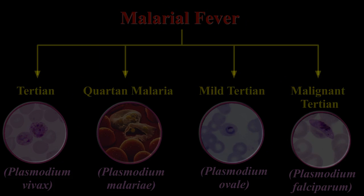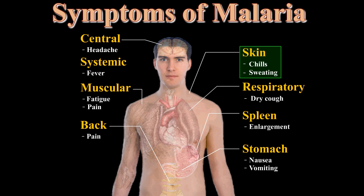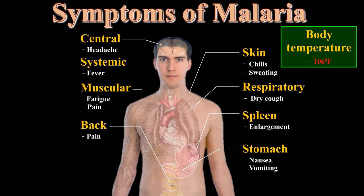In malarial fever, the patient suffers from shaking chills and sweating. As the chills subside, the body temperature may rise up to 106 degrees Fahrenheit.